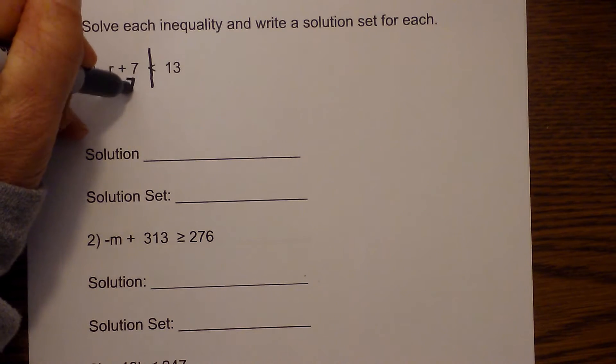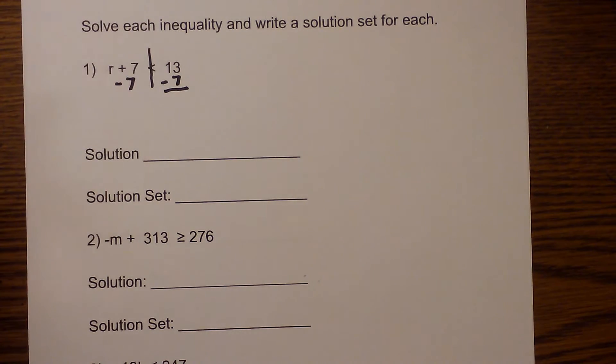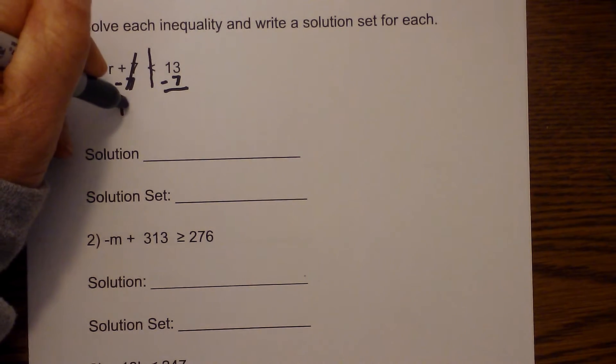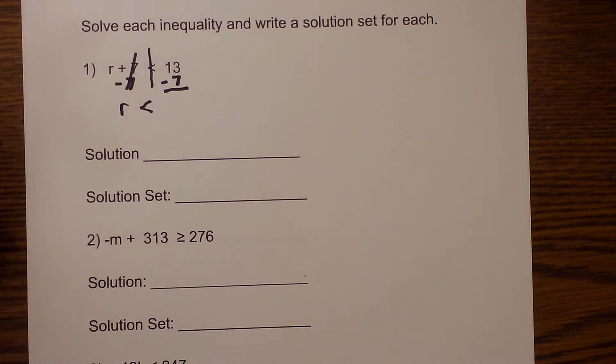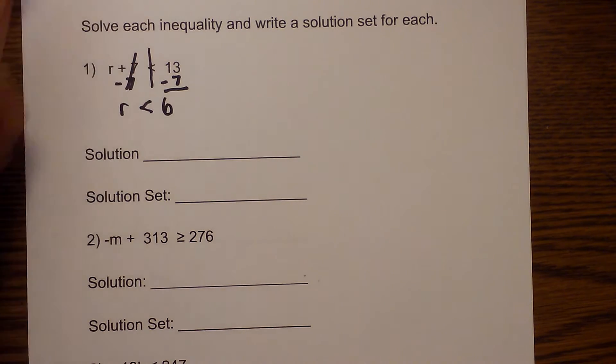So the inverse operation is subtraction. I'm going to subtract 7 from each side. 7 minus 7 will cancel. I'll bring the r down, keep the sign the same, and 13 minus 7 is 6.